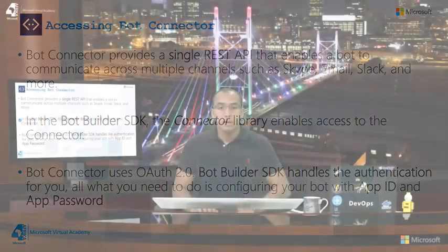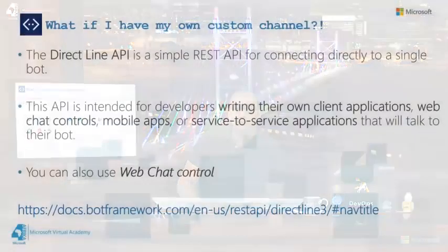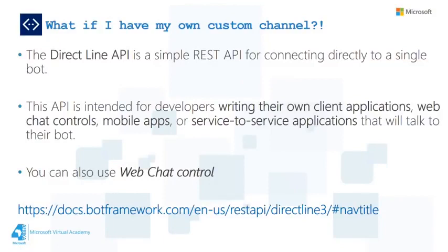Microsoft Bot Framework supports several channels: Facebook Messenger, Skype, Microsoft Teams, Slack, Bing, Cortana, and more. If you have a custom channel — for example, a mobile app or web app — you will need to use the DirectLine API, which is a simple REST API that allows you to connect your bot to your own client applications, web chat controls, or mobile apps. You can also embed a web chat control into your application. In Module 3, we'll be using the web chat control as part of our demos. So we have two ways to connect to custom channels: the DirectLine API and the web chat control.